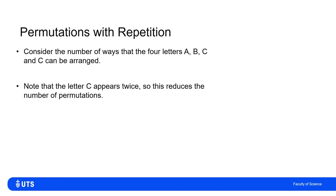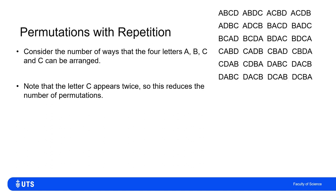Obviously, the difference here is that the letter C appears twice. So this is going to reduce the number of permutations. If I think of the example from the previous case where I had no repetition, I had 24 orderings of A, B, C, D. 4 times 3 times 2 times 1.